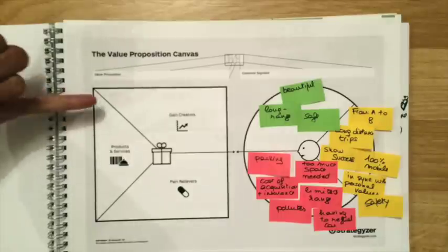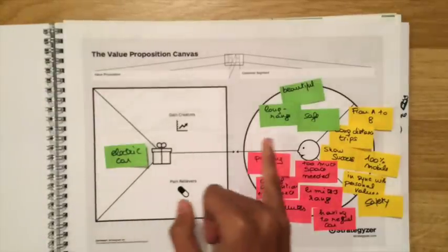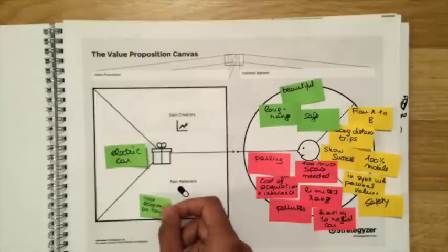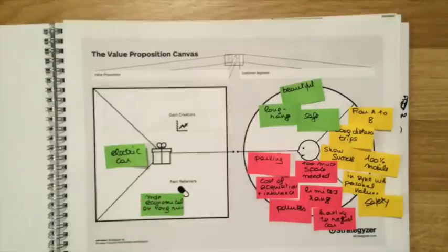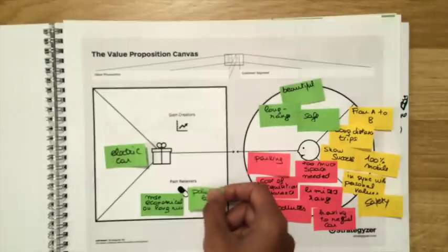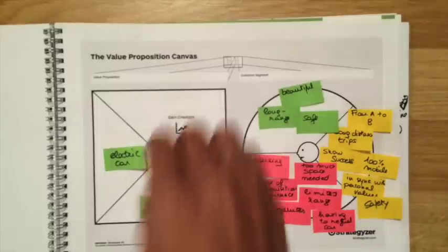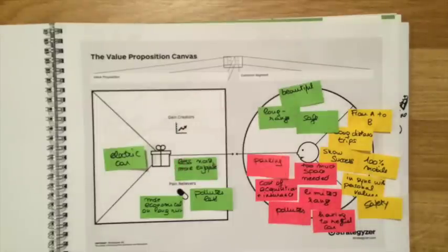Now, let's look at the value proposition of the electric car first. How does the electric car relieve pains and create gains? The electric car costs more at the purchase, where you spend less on the long run. It pollutes less and is better for the environment. It's not as loud as the gasoline car, which makes the experience much more enjoyable.